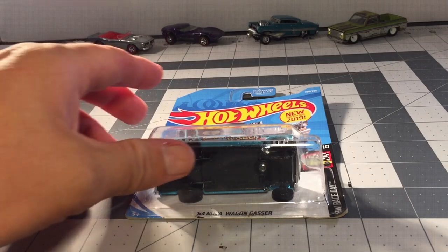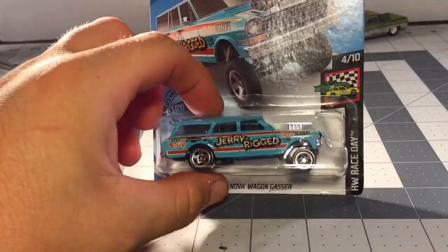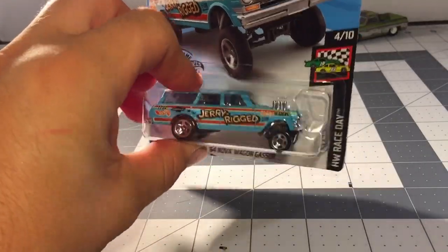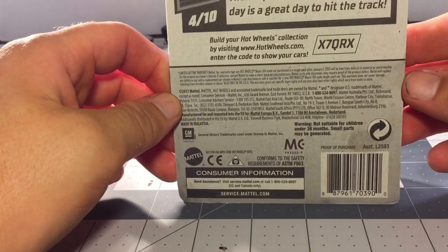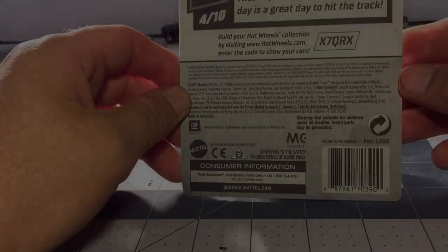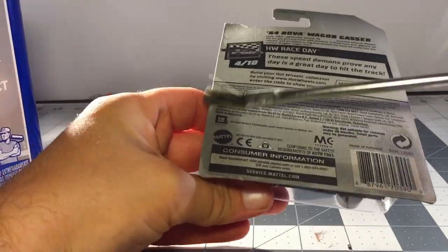Hello YouTube, today we're doing a custom on a 1964 Nova gasser wagon, this is the Hot Wheels 2019 version. We're going to use acetone, brush it on the car to loosen up that glue and pop that car right out of there so we can reuse the package later.